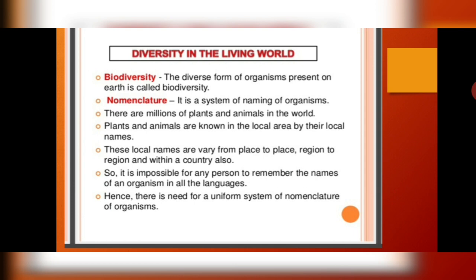For example, if you go by the name of a dog, dogs are called by different words in different languages. These local names vary from place to place and are different in every region, so it is impossible for any person to remember all the names. If you go to Bangalore and say 'yeh kutta hai', they probably won't understand because they have another word in their language. That is why there is a need for a uniform system of nomenclature for organisms.